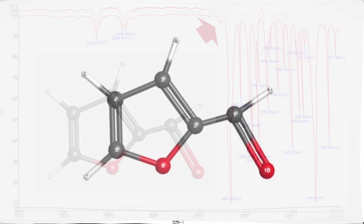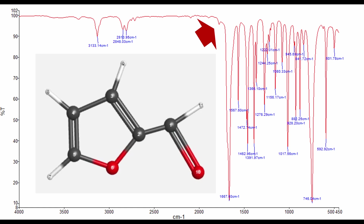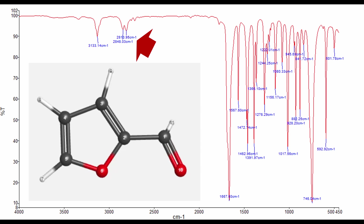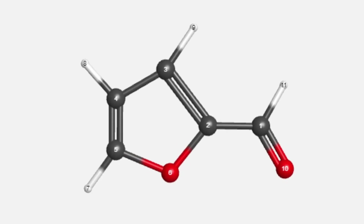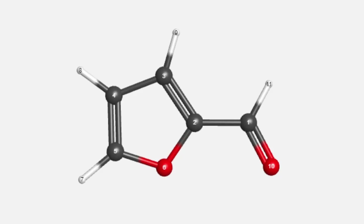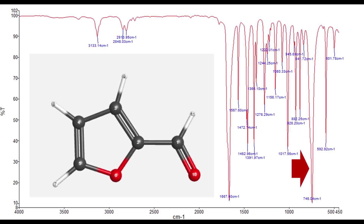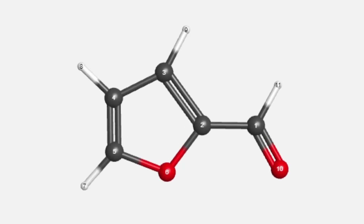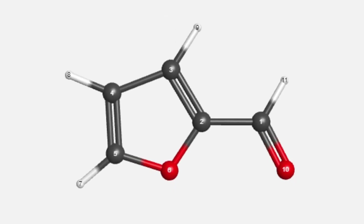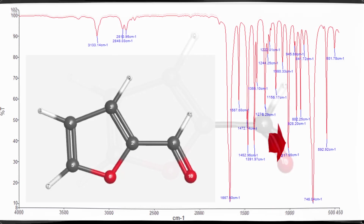The carbonyl stretching C=O: feriferol contains a carbonyl group, which typically appears in the region of 1690–1750. The aldehyde stretch C–H: the aldehyde functional group in feriferol contributes to its peak in the region of 2700–2850 due to the C–H vibrations. Aromatic ring stretching C=C: feriferol's aromatic ring vibration typically manifests in the region of 1500–1600. Out-of-plane bending of an aromatic ring C–H: this typically appears in the region of 690–900, though it can be weak in feriferol due to its relatively small aromatic ring. Furan ring stretching C=C: the furan ring in feriferol contributes vibrations in the region of 1600–1650. Furan ring bending C–H: this typically occurs in the region of 900–1000.